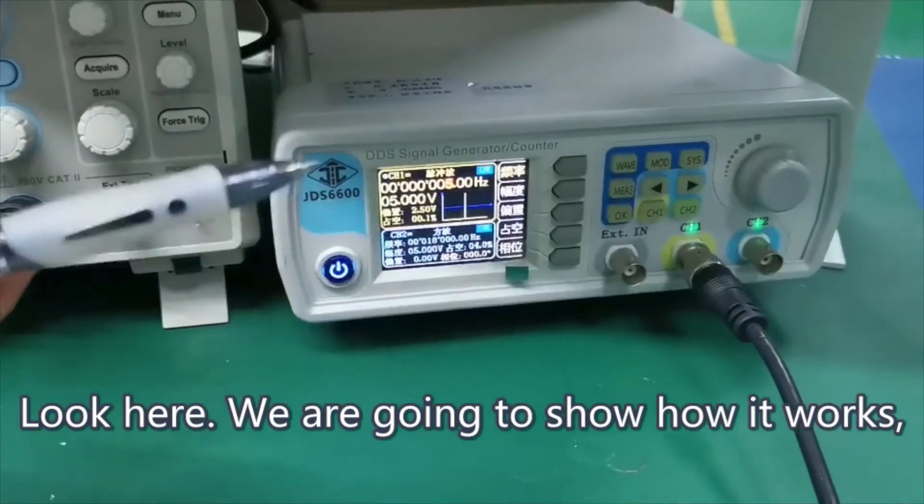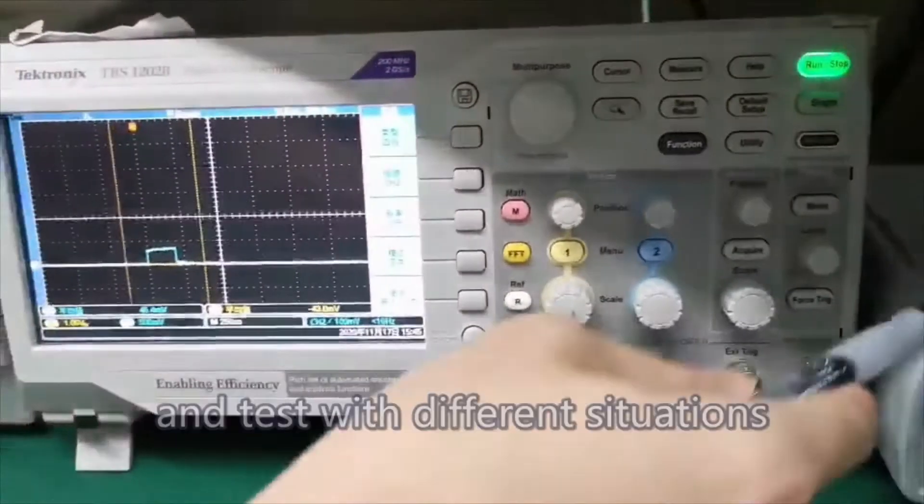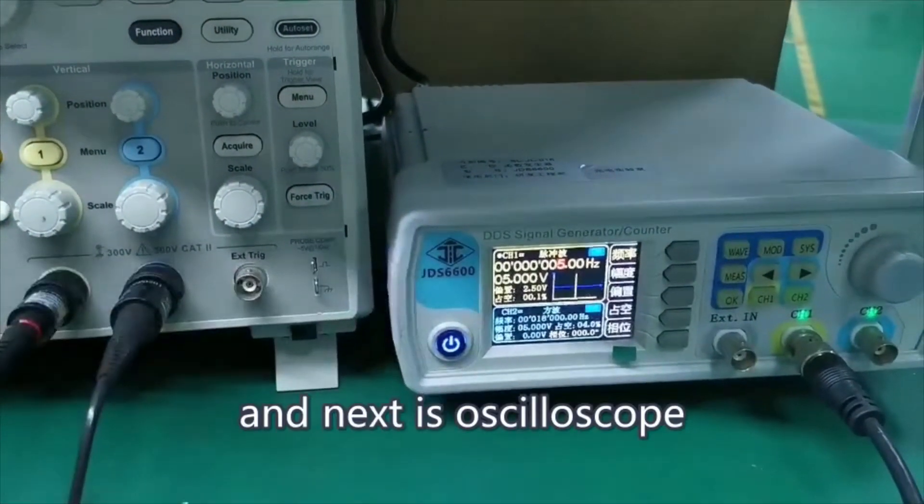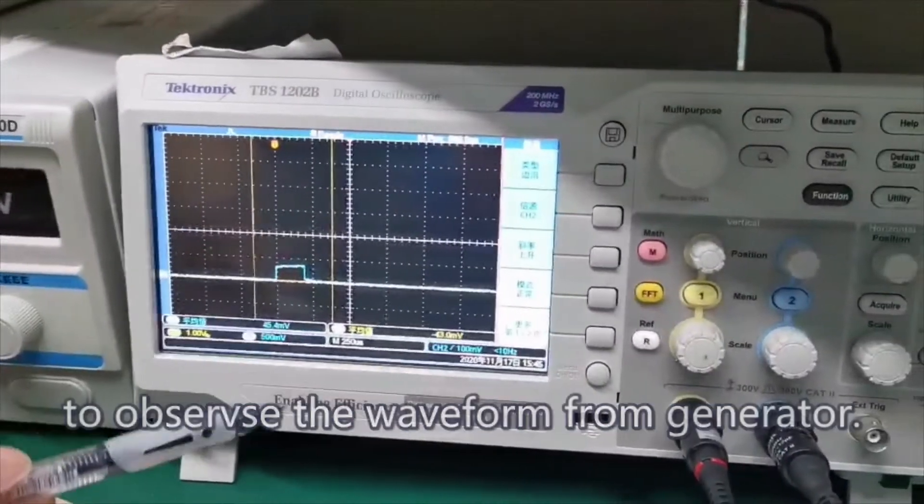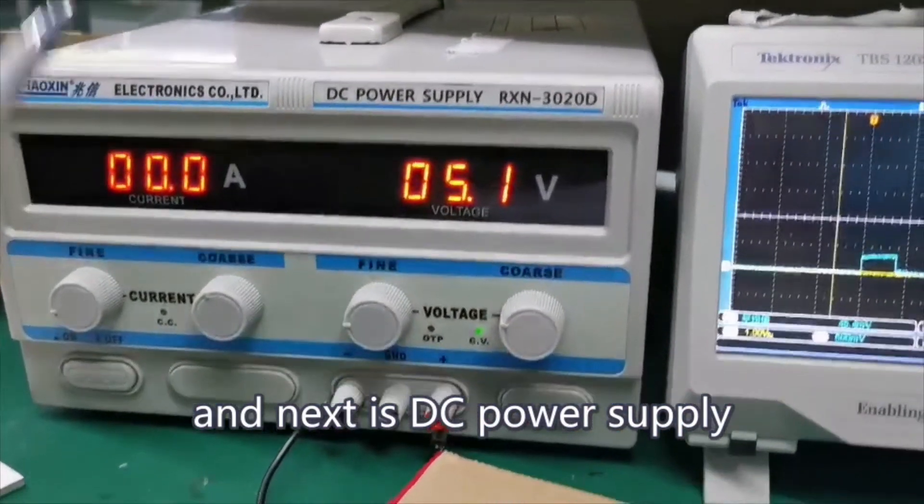Look here, we are going to show how it works and test different situations. This is the signal generator, and next is the oscilloscope to observe the waveform from the generator, and next is the DC power supply.